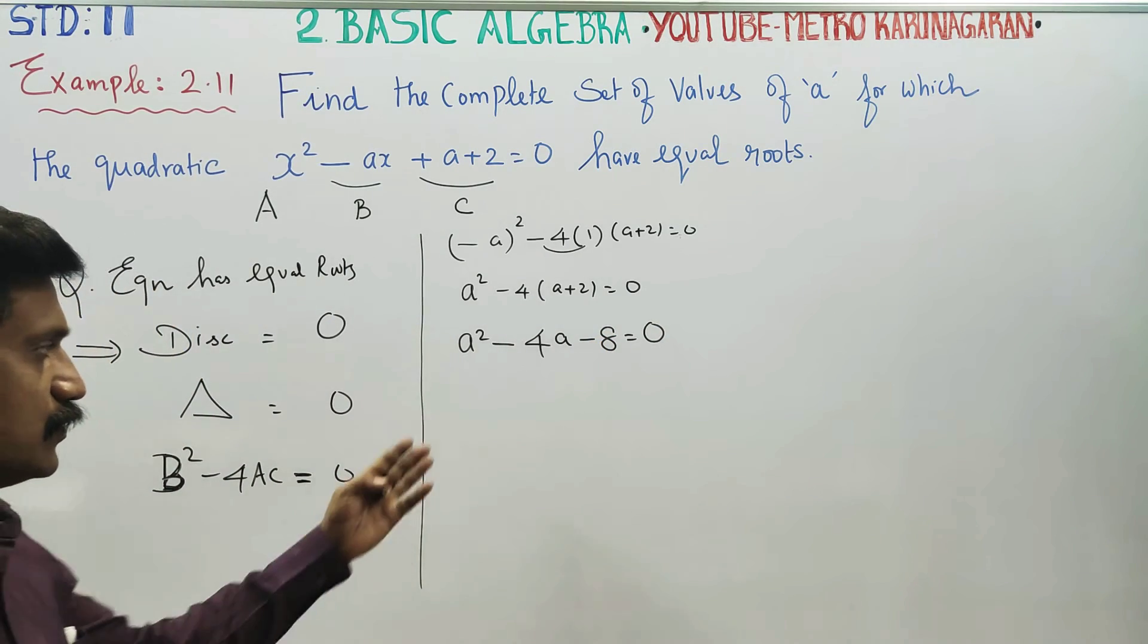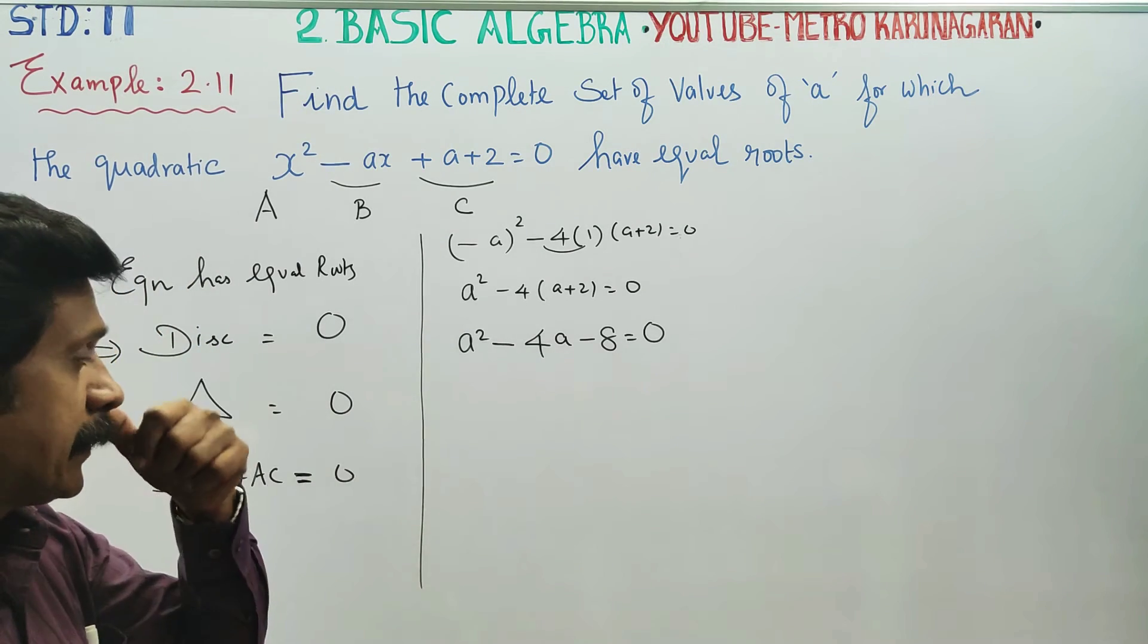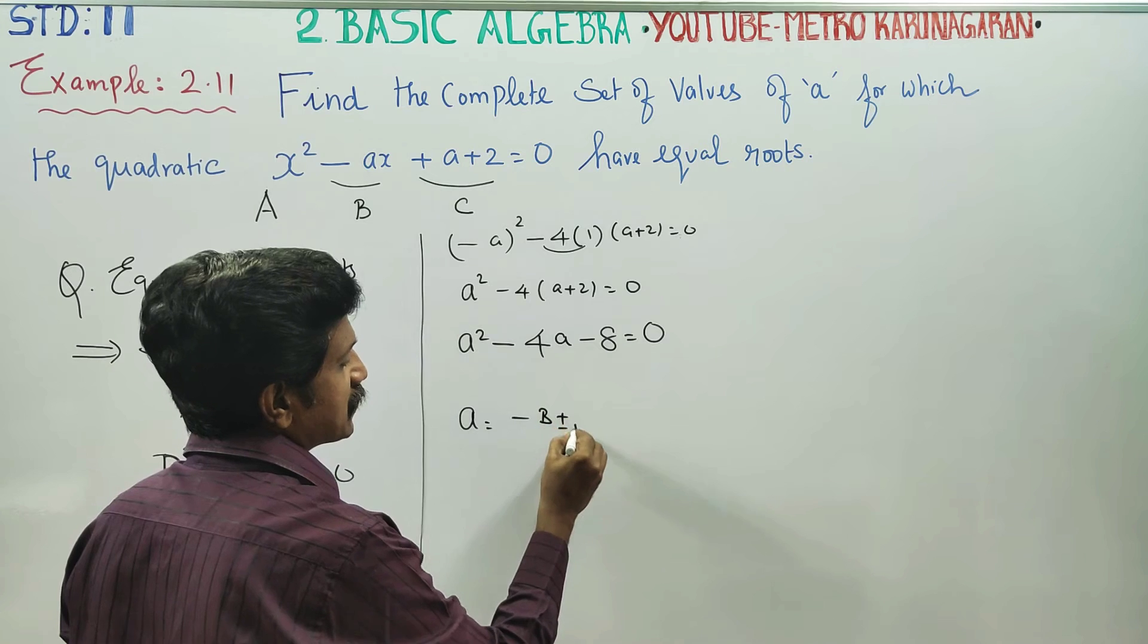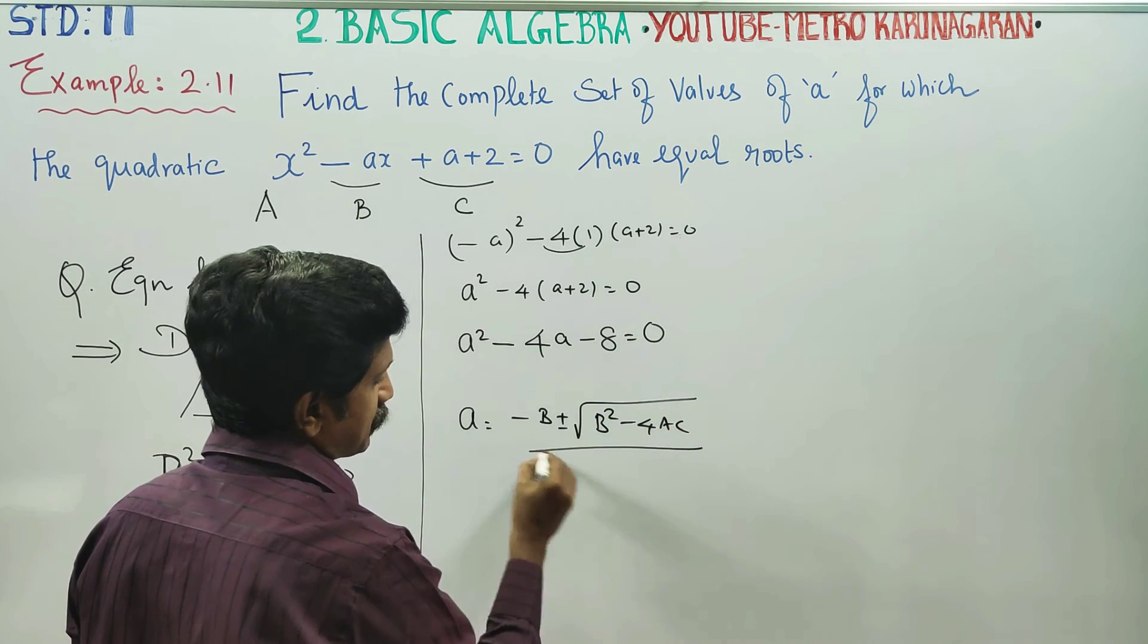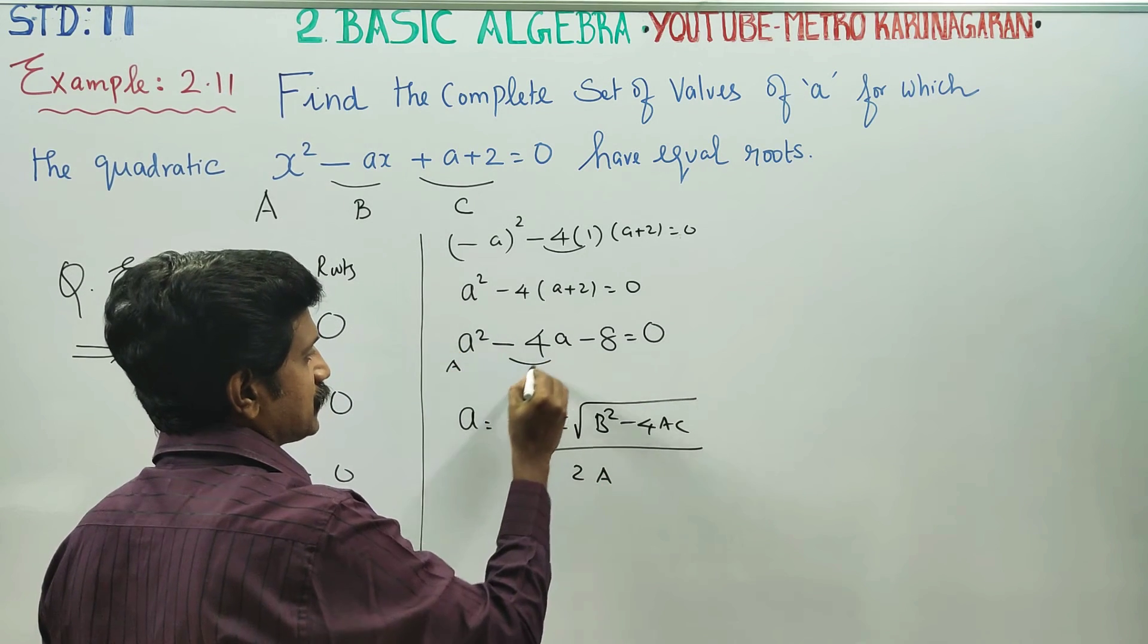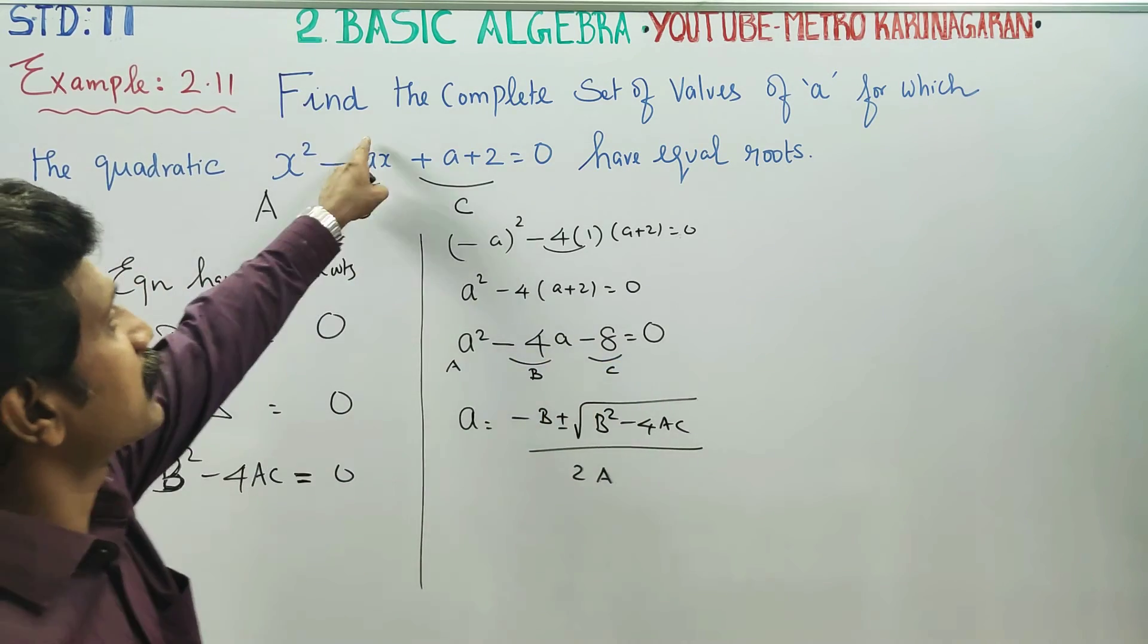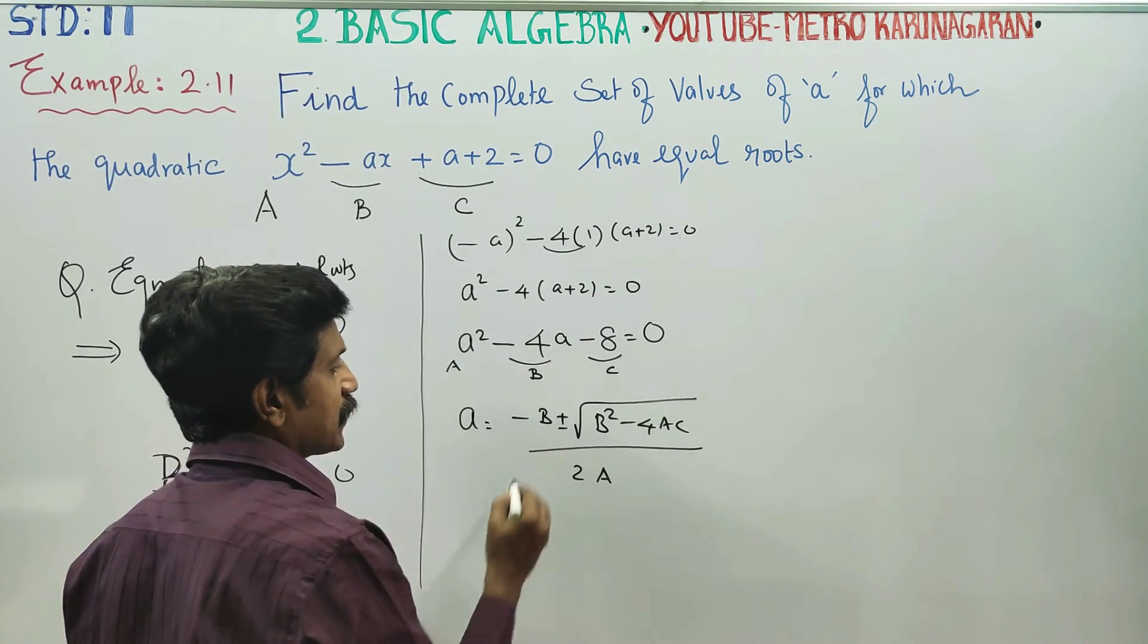Now, I am going to use the formula method to solve A. I am going for formula method. What is the formula method? A is equal to minus B plus or minus square root of B square minus 4AC by 2A. Here A is coefficient of A², B is coefficient of A, C is constant. Formula method to solve A. We need to find the complete set of values of A. A is the answer. A is a quadratic equation.